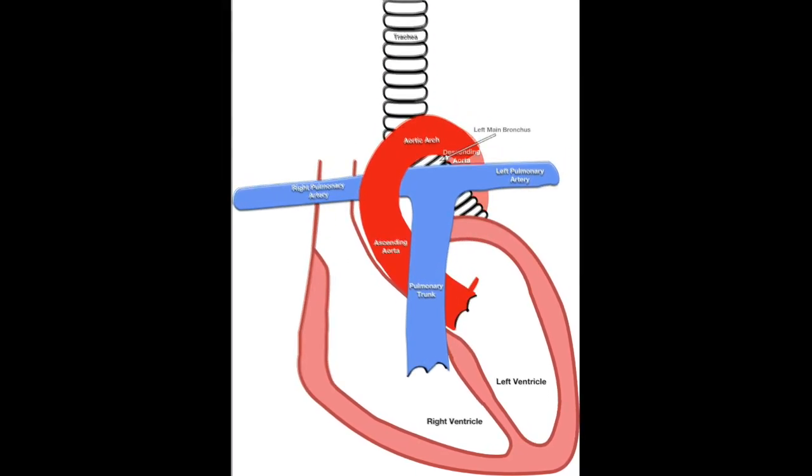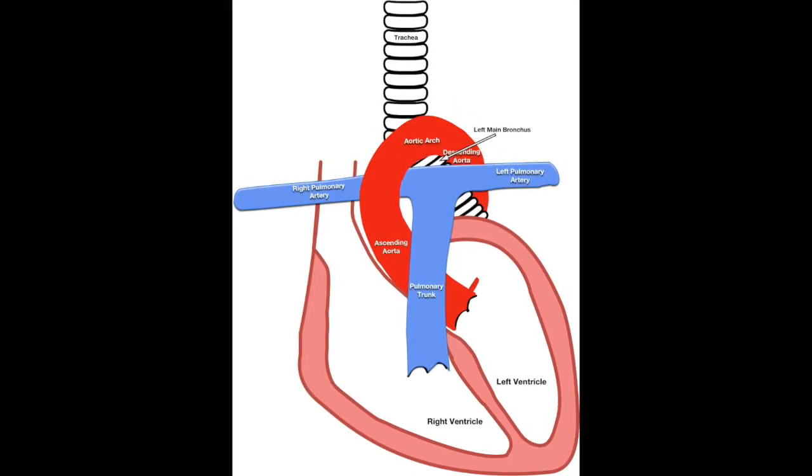Beyond this point, it continues inferiorly as the descending aorta which passes posterior to the hilum of the left lung and primarily supplies the abdomen. Typically, the arch of the aorta provides three branches to supply the upper body and head.